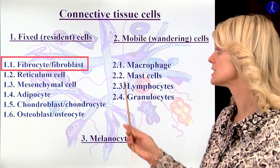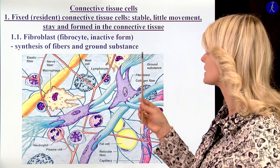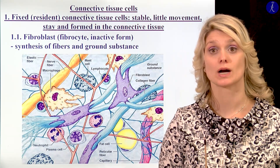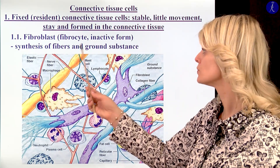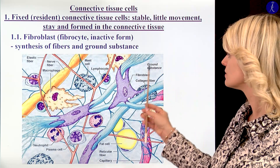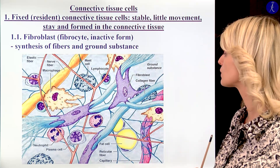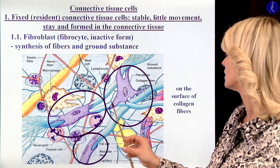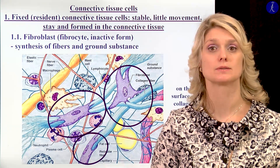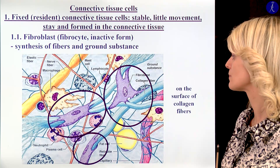Let's see now first the fibrocytes and fibroblasts. This cell is really important in the connective tissue because the fibroblasts — who are the active cells — will produce the fibers and the ground substance of the connective tissue. Here in this schematic picture you see the collagen fibers and the fibroblasts, which are fixed on the surface of the collagen fibers. They are huge, with big cytoplasm and lots of processes.